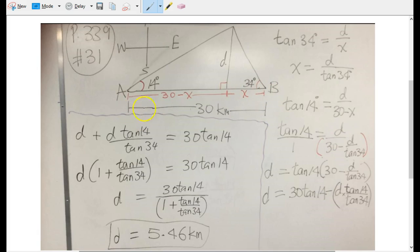We let this part be x, and then since the whole of AB is 30, then from here this part of the side of the triangle to A is going to be 30 minus x.